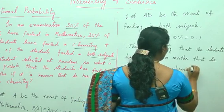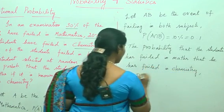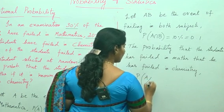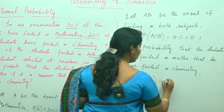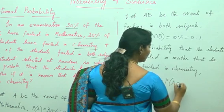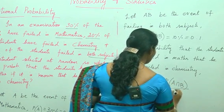Therefore, the required probability is P of A given B, which equals P of A intersection B divided by P of B.